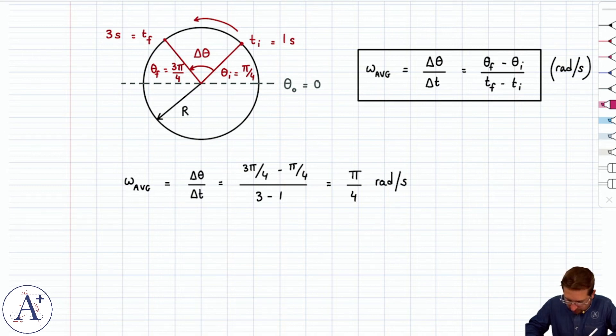And that, of course, makes sense, because if you start out here, and you have 2 seconds to go from here to here, then pi over 4 in the first second, pi over 4 in the second second, and overall, you cover pi over 2 radians in 2 seconds. So, on average, pi over 4 radians per second.